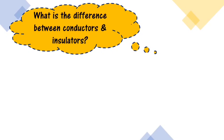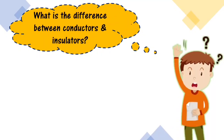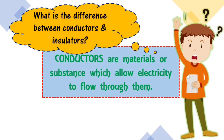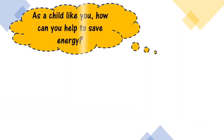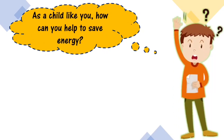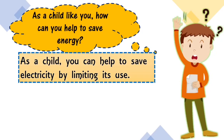Let's answer these questions. What is the difference between conductors and insulators? Conductors are materials or substances which allow electricity to flow through them, while insulators are materials that do not conduct heat and electricity. As a child, how can you help to save energy? You can help save electricity by limiting its use. For example, when you are done watching TV, you should unplug it. Instead of using fans or aircons, open the windows or doors to stay in ventilated areas.